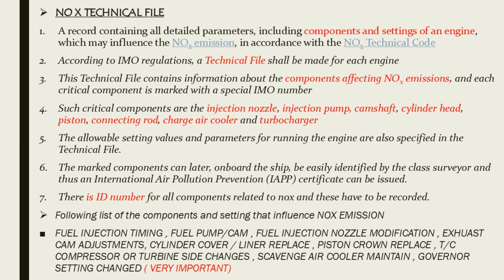The NOx Technical File contains all parameters, components, and settings of the engine that are in conjunction with NOx emission. Critical components include: injection nozzle, injection pump, cam shaft, cylinder head, piston, connecting rod, charge air cooler, and turbocharger. All these components have an ID number. If they are overhauled or replaced with new spares, the ID number of the new spare must be noted in the NOx Technical File. Components and settings that influence NOx emissions — such as fuel injection timing, fuel pump or cam, fuel injection nozzle modification, exhaust cam adjustment, cylinder cover/liner replacement, piston crown replacement, turbocharger compressor or turbine side changes, scavenge air cooler maintenance, and governor setting changes — are very important and will be asked by surveyors.